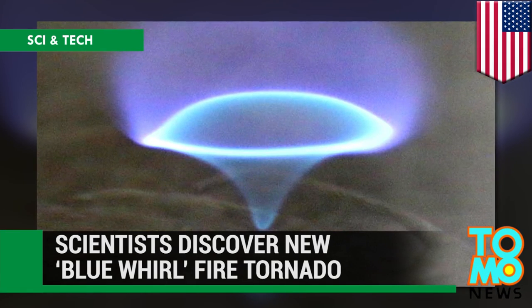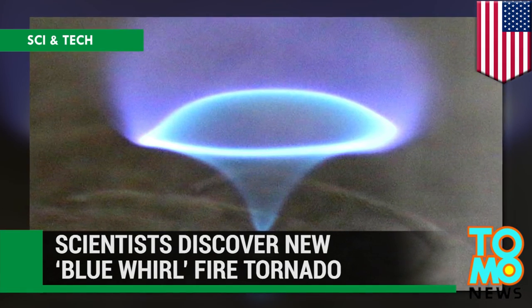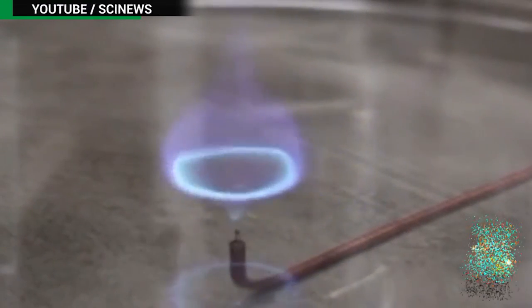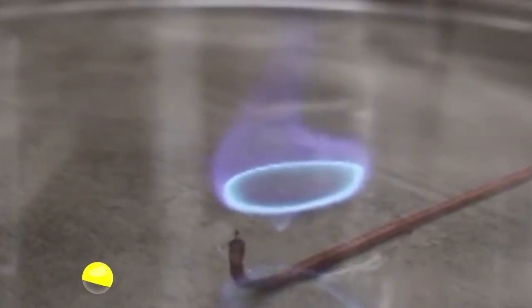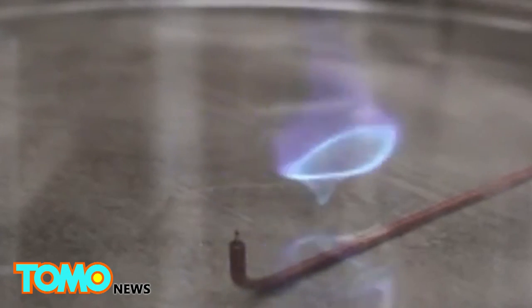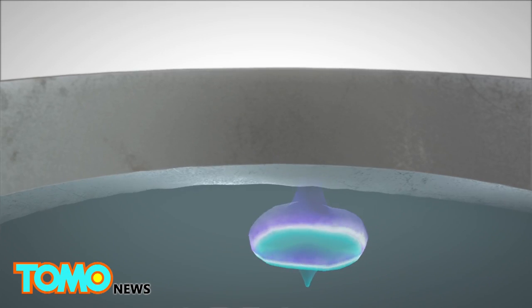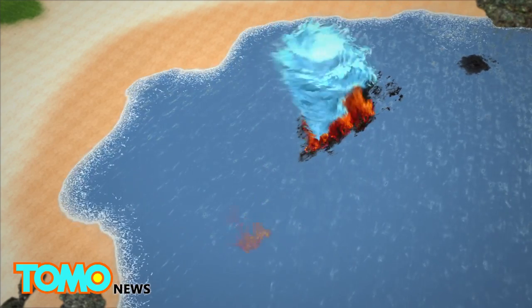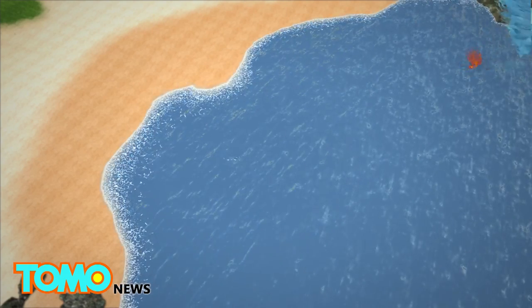Scientists discover new Blue Whirl fire tornado. This pretty little flame was recently discovered and researchers believe it could be the key to cleaning up oil spills. A blue-tinged fire tornado named Blue Whirl was discovered by a team of researchers at the University of Maryland. The fire tornado in controlled conditions could be the most efficient way to burn hydrocarbons.